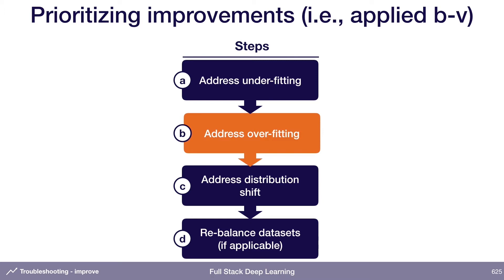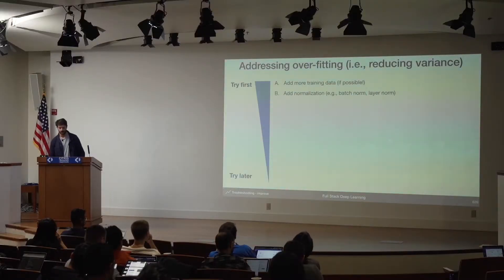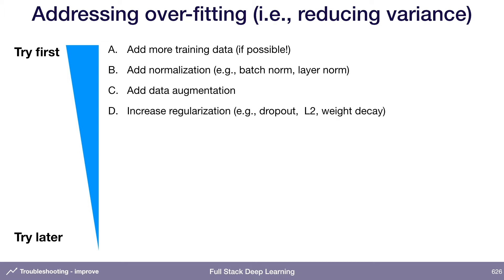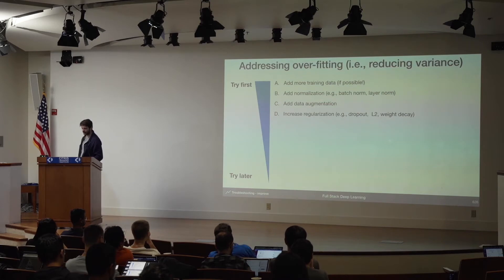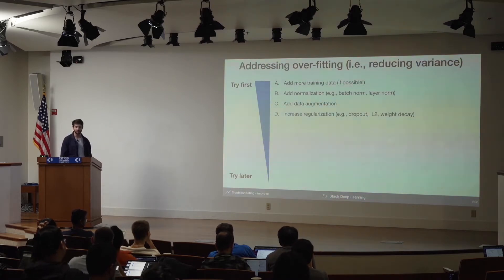How should we think about addressing overfitting? There are a number of strategies. The simplest and often best is just to add more training data — if you can, this is usually the best way to address overfitting. It's not always possible, so another thing you can try is adding normalization like batch norm or layer norm, which also serve as pretty effective regularizers. Data augmentation tends to work pretty well as well. Regularization — dropout or L2 — is another strategy. Right now there's a trend toward building models with a lot of normalization but not much regularization, though these should still be in your toolbox.